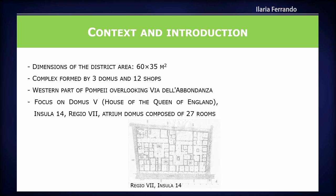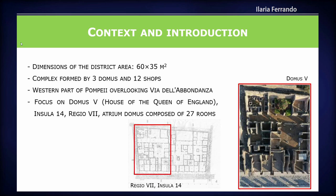Here is the context we are looking at. The dimension of the district area is about 60 by 35 meters square. The complex is formed by three domus and 12 shops. It is located in the western part of Pompeii, overlooking Via della Bondanza, which is one of the most important arteries of the site. The focus is on Domus 5, also known as the House of the Queen of England, located in Insula 14, Region 7, and composed of 27 rooms.